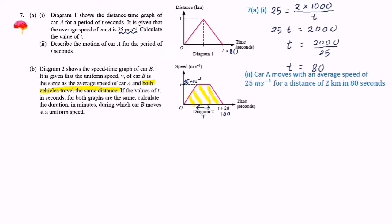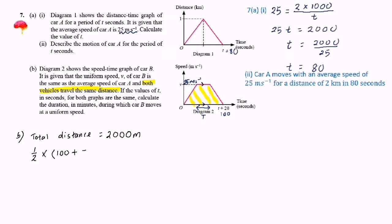To find the duration during which car B moves at uniform speed, we need to form an equation. The total distance equals 2,000 metres. The area under the graph is a trapezium, so we use the formula: one half times the sum of the two parallel sides times the height. The parallel sides are 100 and T, and the height is 25, giving: half times (100 plus T) times 25 equals 2,000.